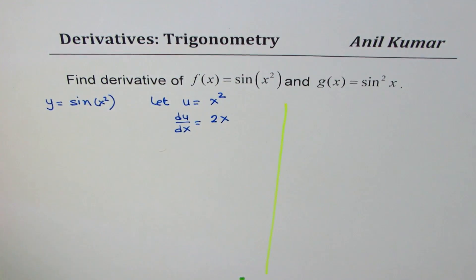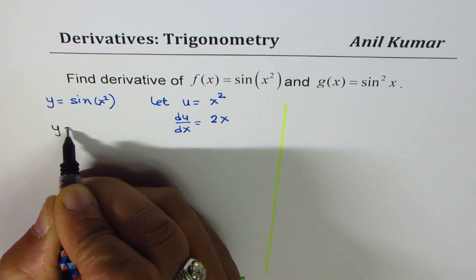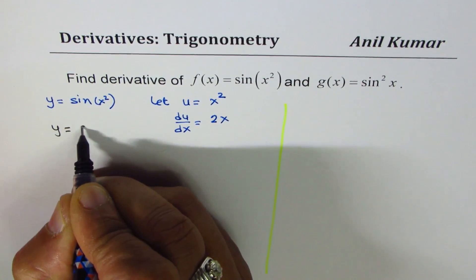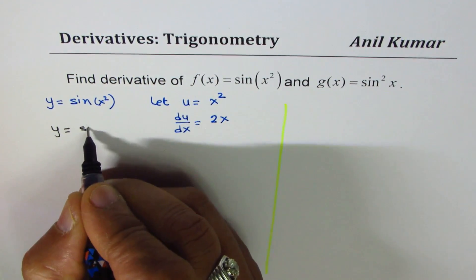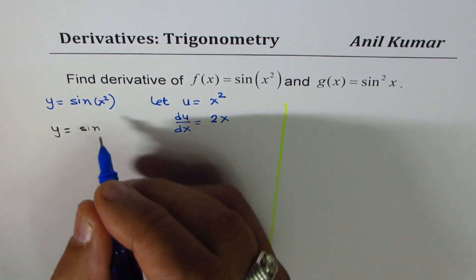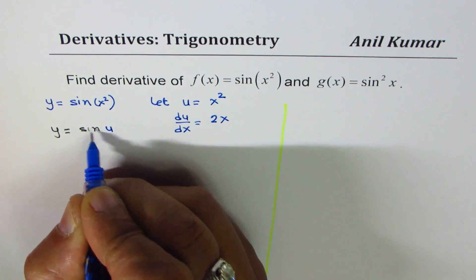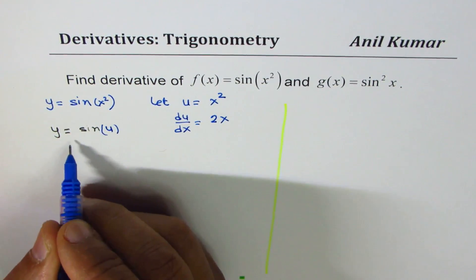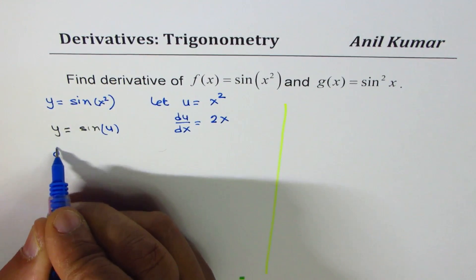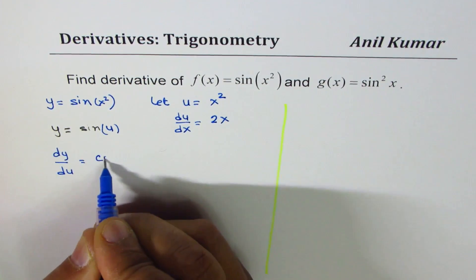If I substitute u as x², I can rewrite this equation in terms of u. So y = sin(u). Now, dy/du equals cos(u).